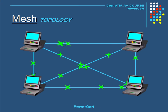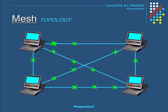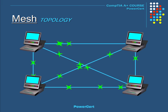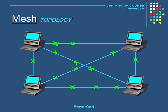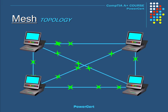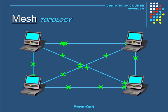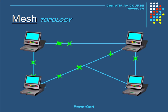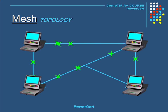In fact, the internet is a perfect example of a mesh topology. The advantage of a mesh topology is that it creates a high redundancy level, because if one or more connections fail, the computers would still be able to communicate with each other.